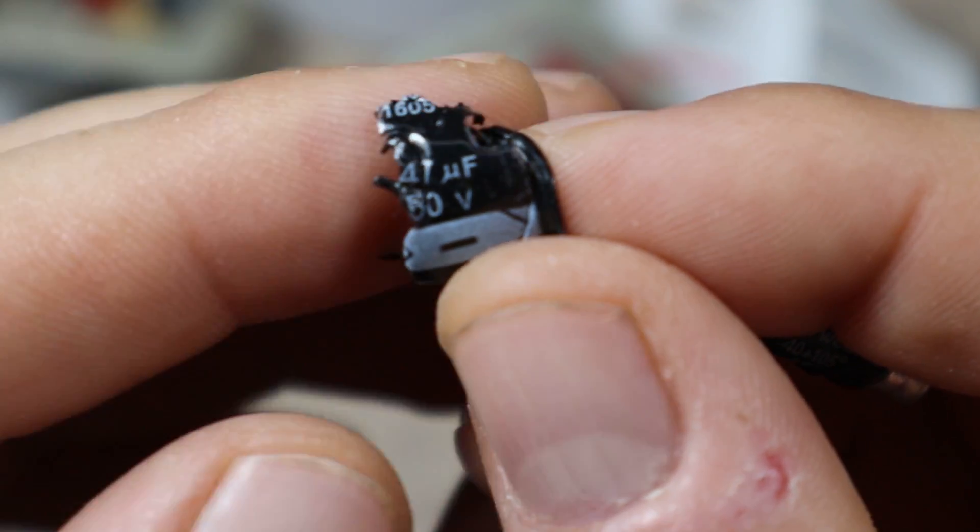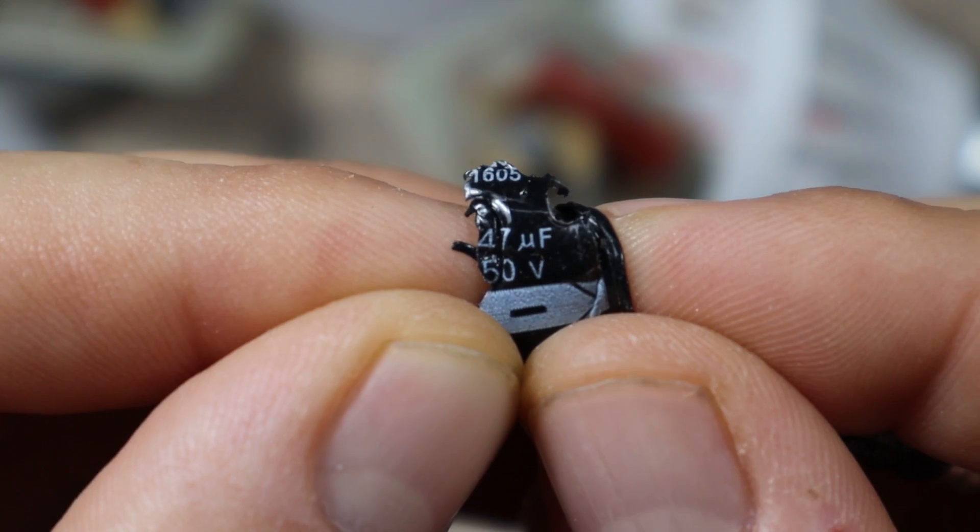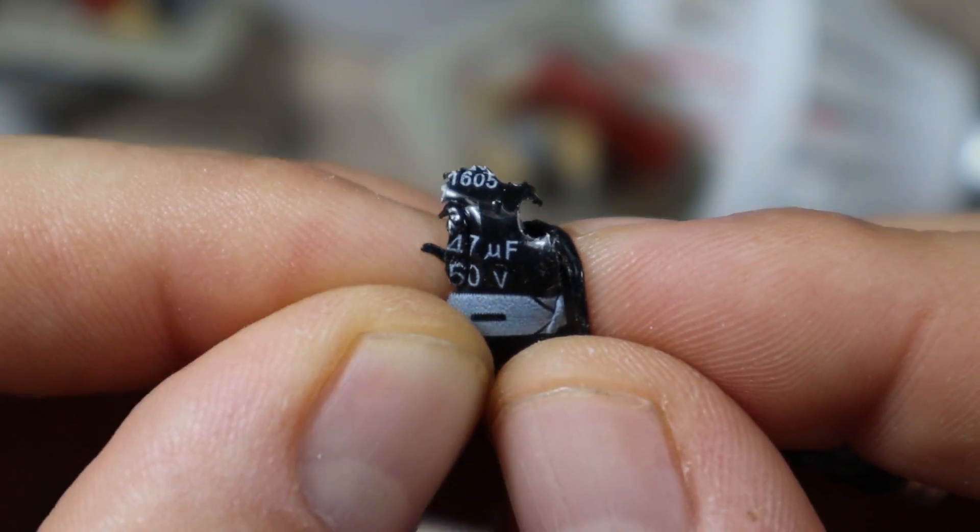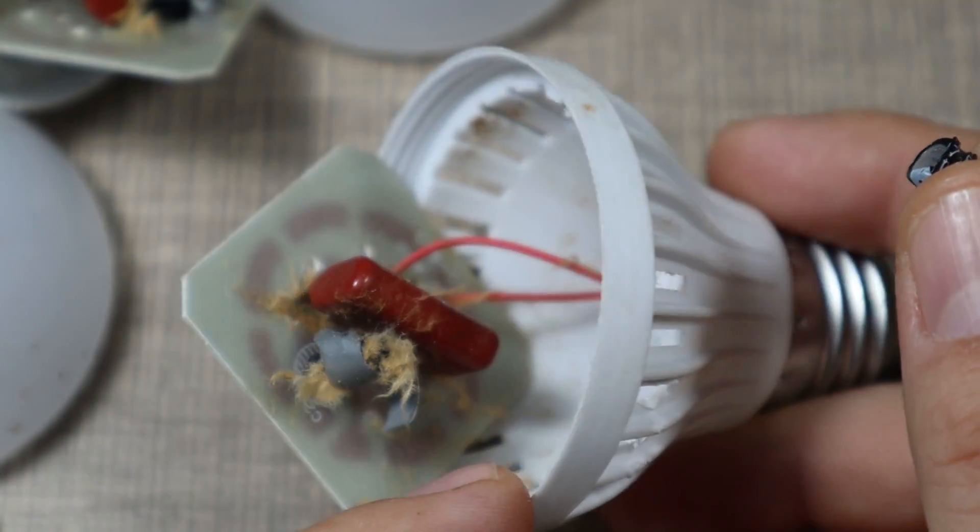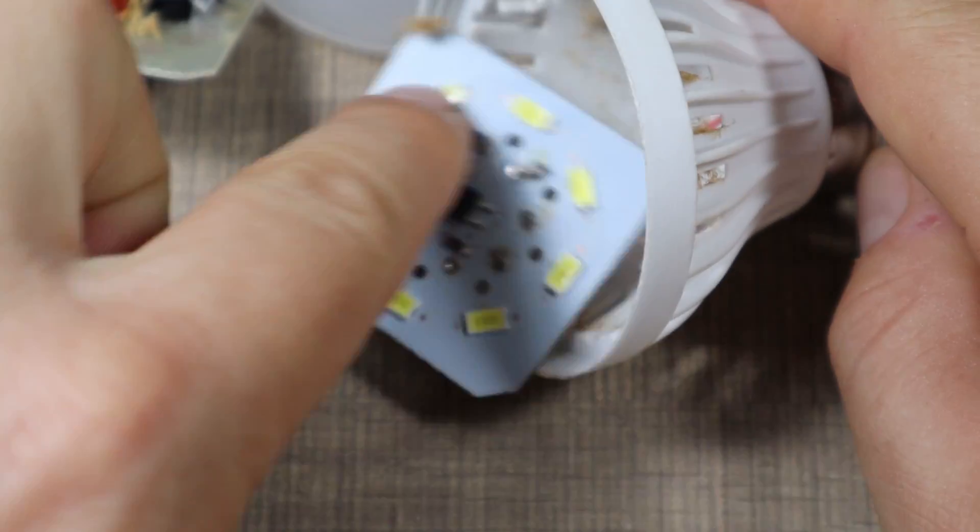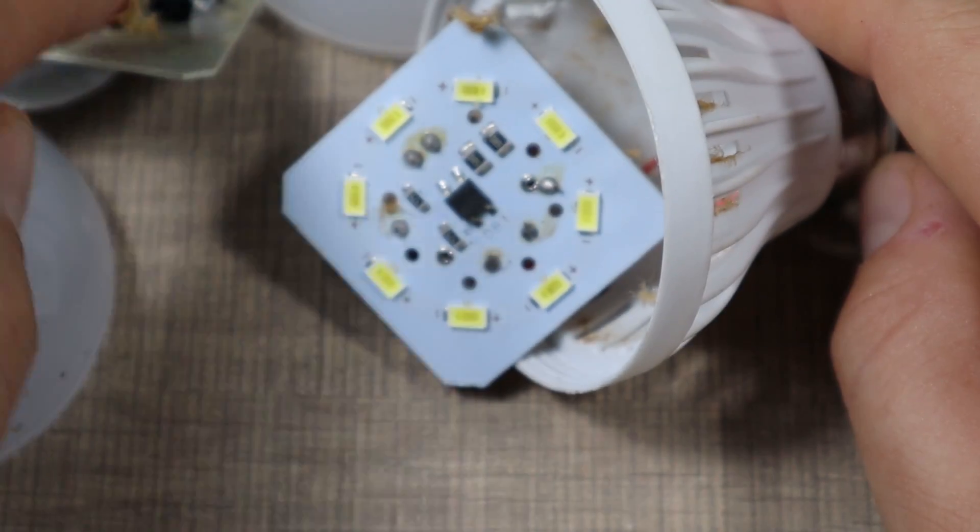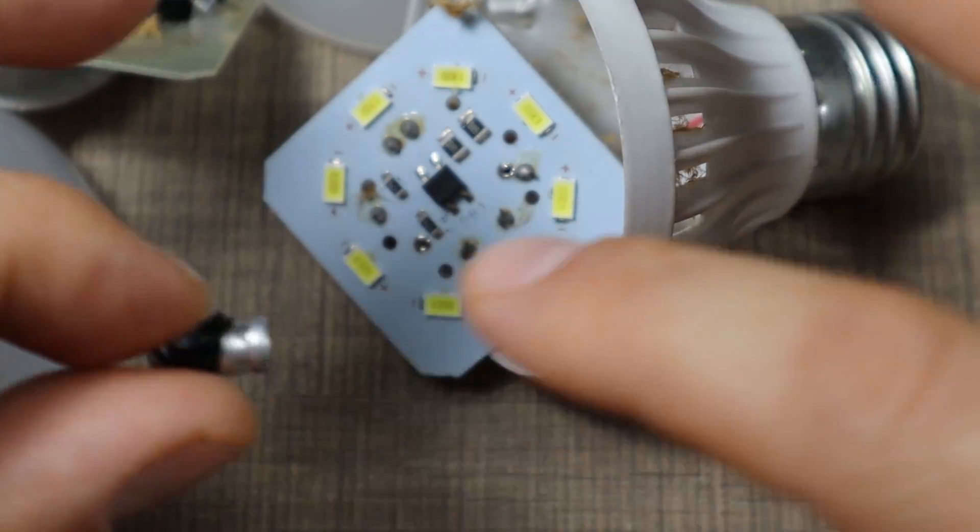It might also be that these are just 50 volts rated capacitors, and that would explain why they have blown. The lights are running on 220 volts and then there is a certain voltage being generated and dropped through the capacitor on the LEDs, so we would need a capacitor that has a higher rating.